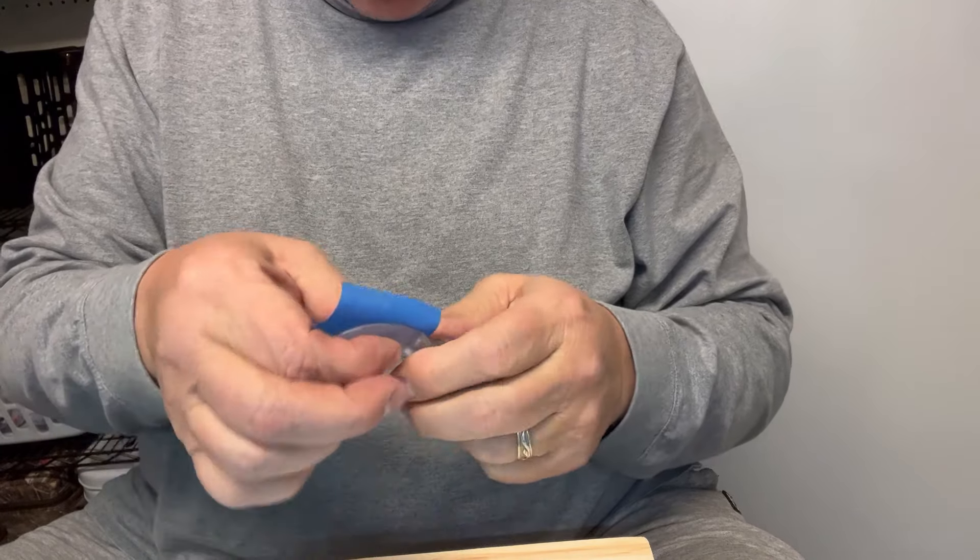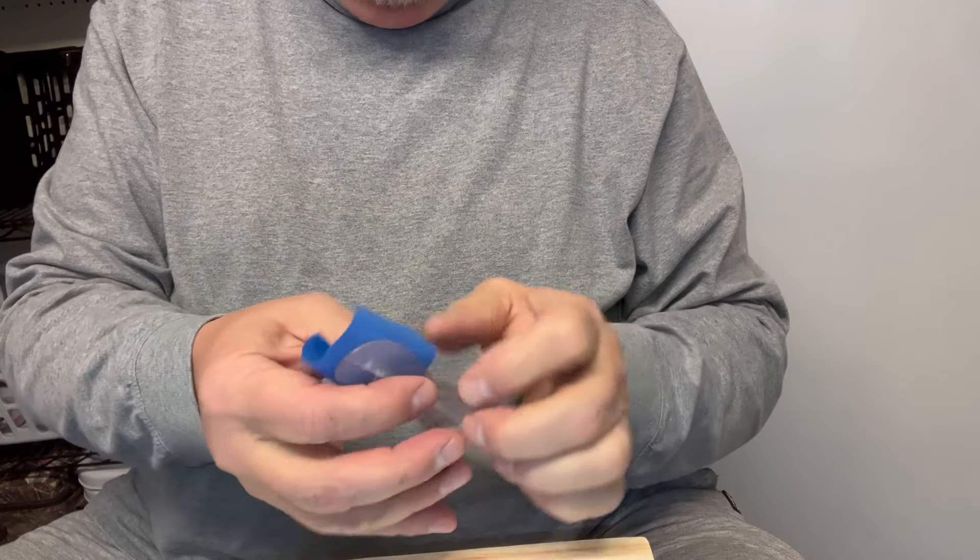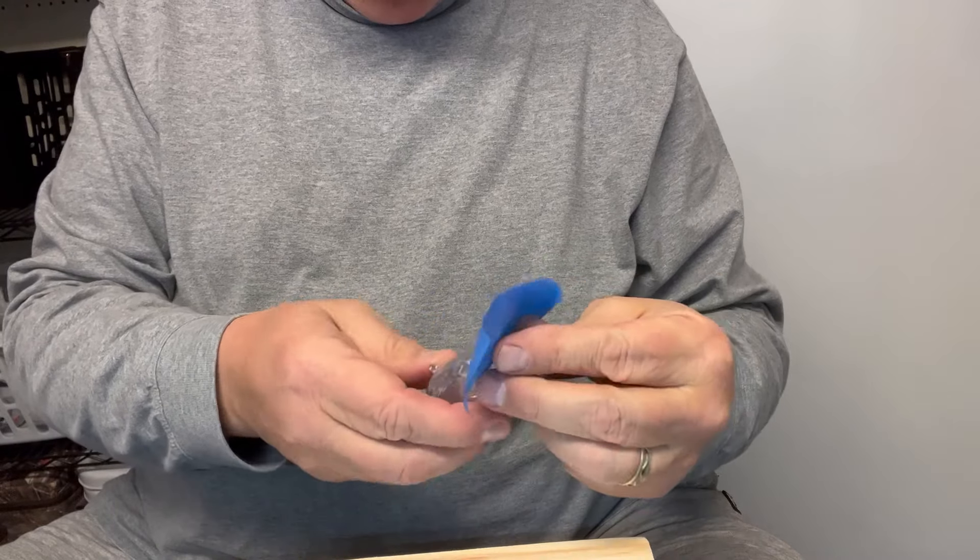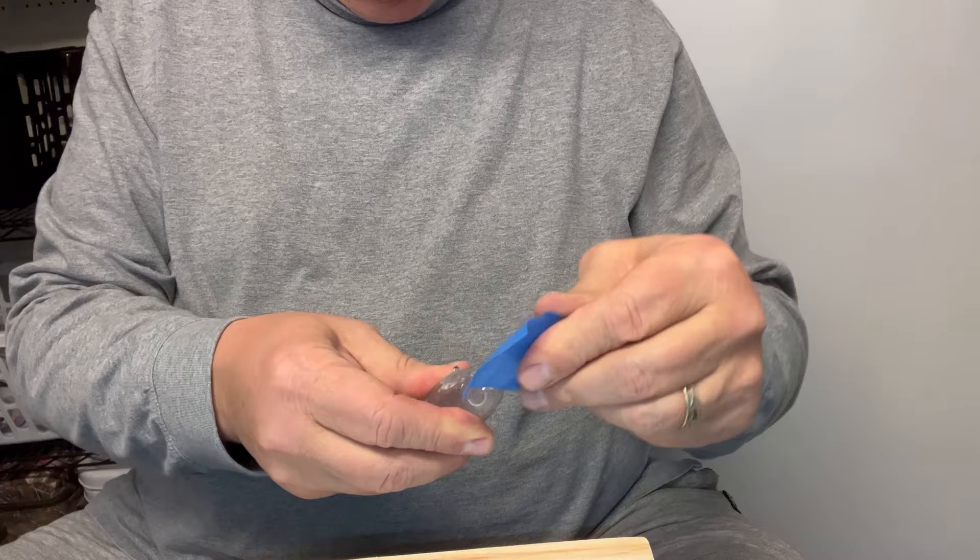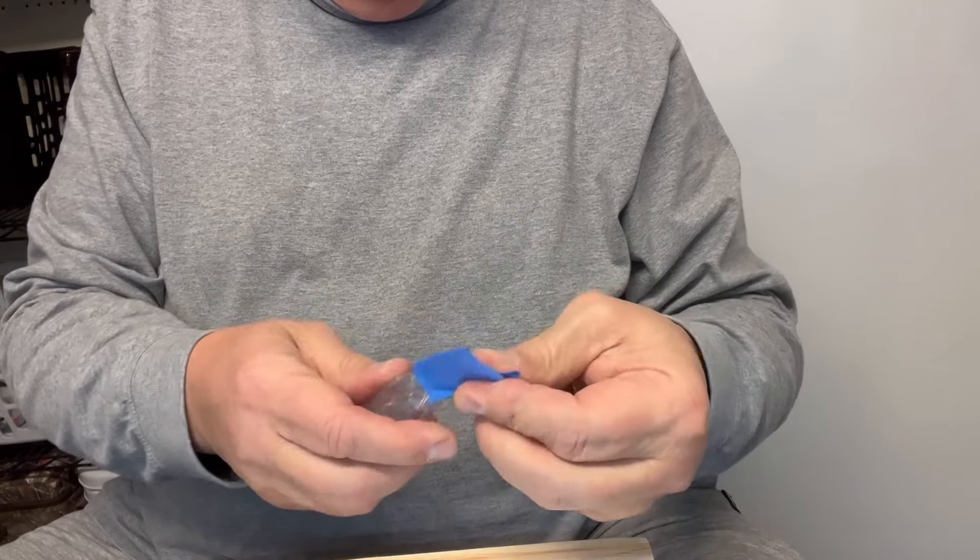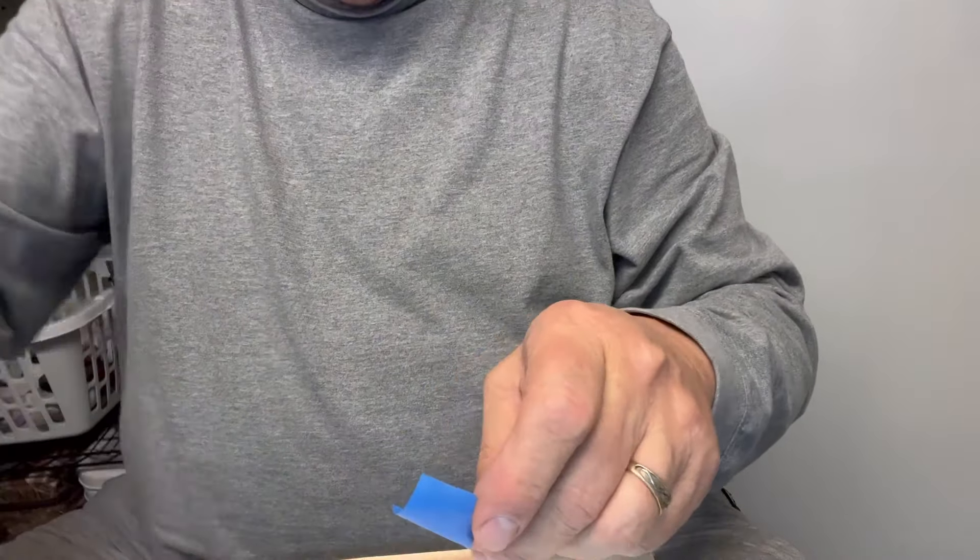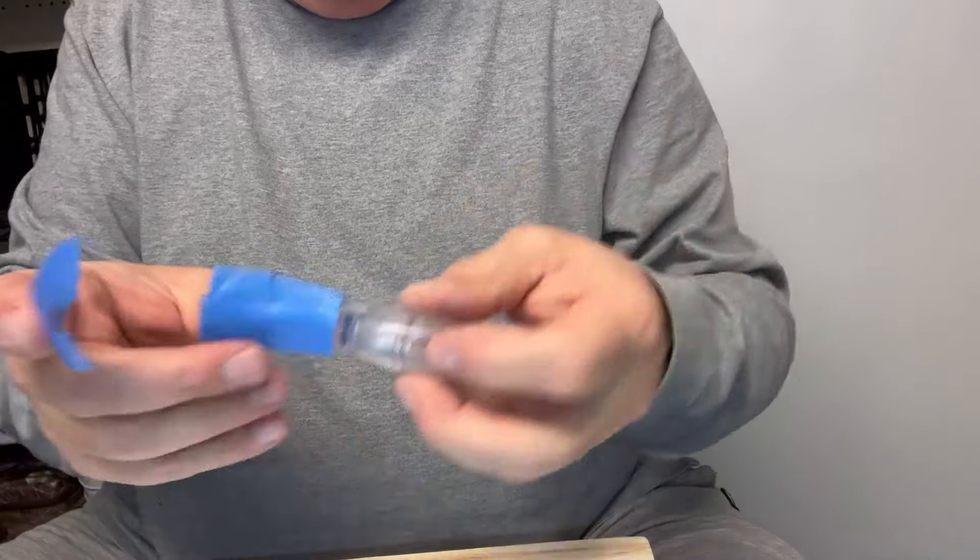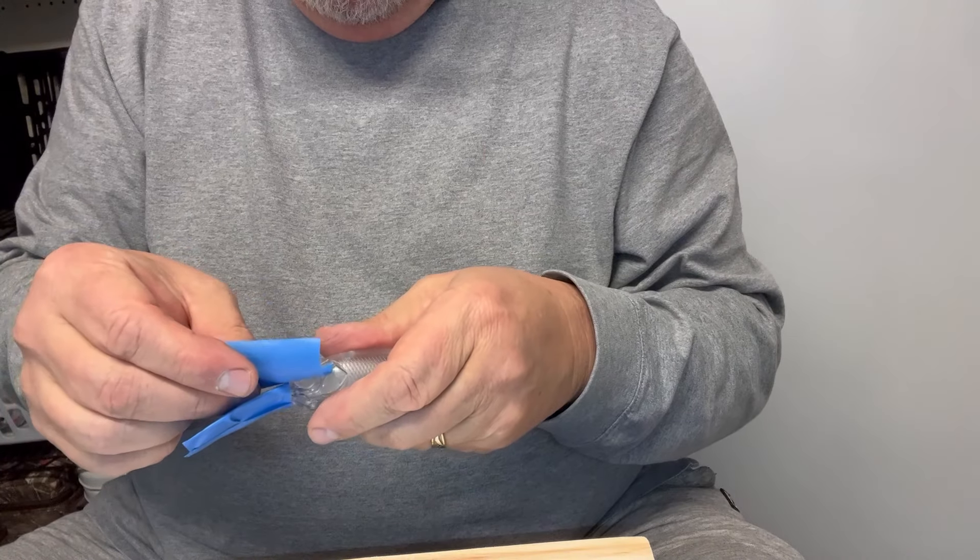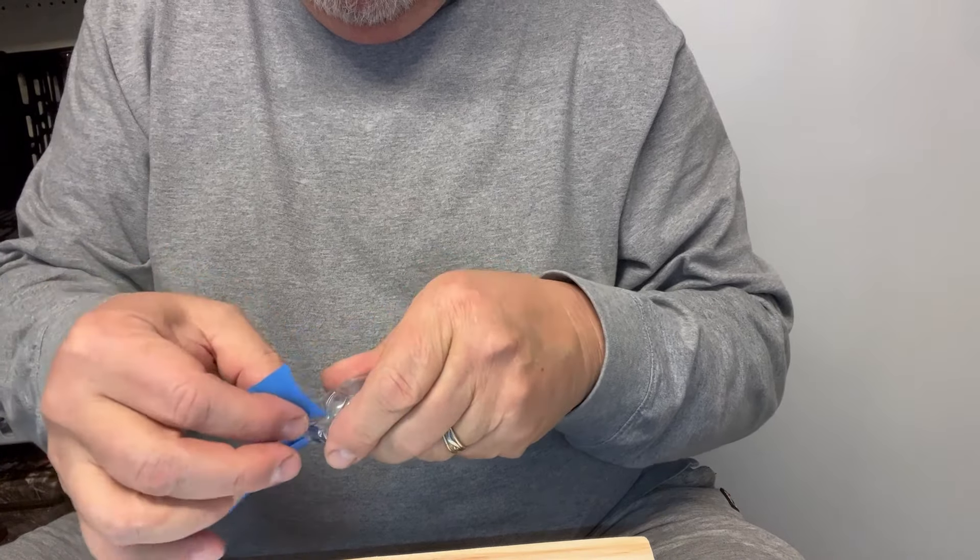So all I'm using is this blue painters masking tape. I get it as close to the lip, or to the body I should say, as I can. Then I'll cut a couple smaller pieces to try to get that lip completely covered, the lip, the bill, whatever you want to call it.